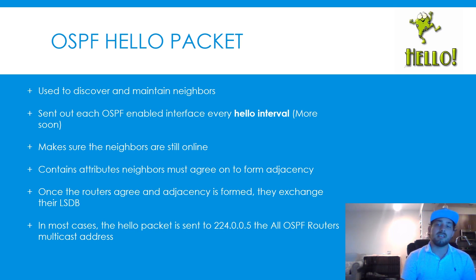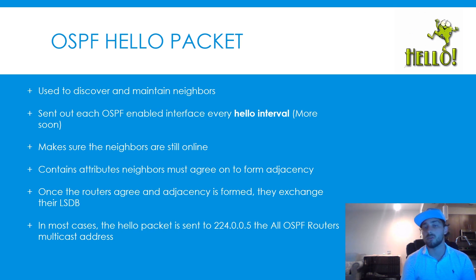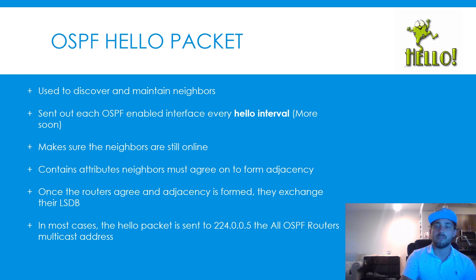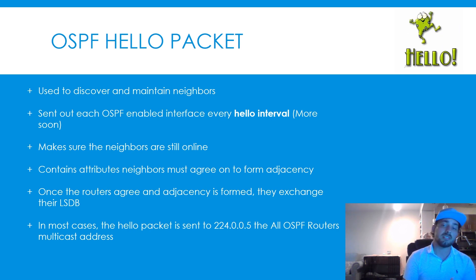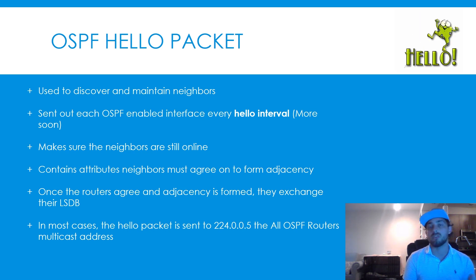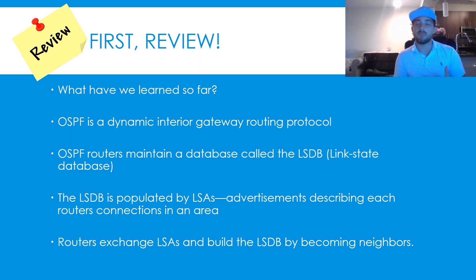The hello packets contain information or attributes that the routers must agree on to become neighbors. Once the routers agree and start to form the adjacency, they begin to exchange their link state database. Most of the time the hello packet is sent to the all routers address, 224.0.0.5, though you may also run into situations where you manually define a neighbor. In the next section we'll take a deeper look into an actual OSPF hello packet.